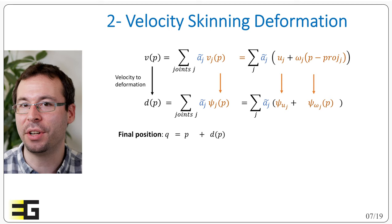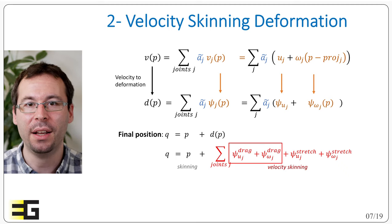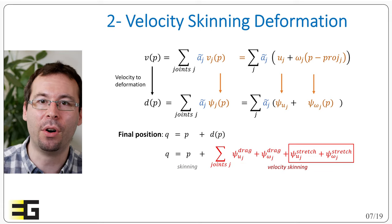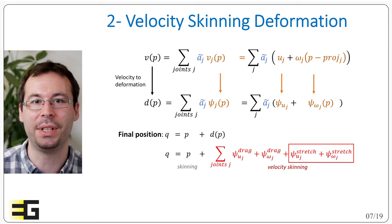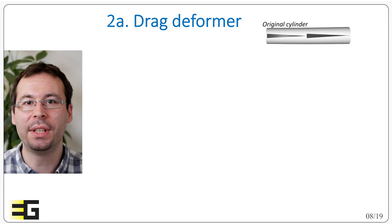Now we are able to characterize precisely the type of motion, and we can even define for each linear and angular velocity a specific parametric deformation. In addition, we want to mimic drag and stretch effect, so we are going to look for four parametric deformers psi for the drag effect for the linear and angular velocity, and the stretch effect for also the linear and angular velocity.